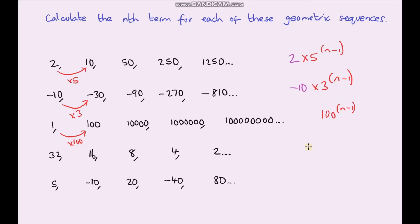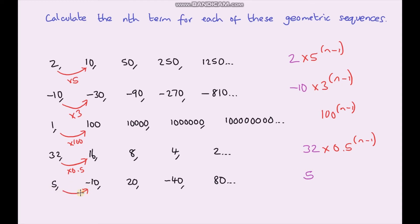The fourth sequence starts at 32. We're dividing by 2 each time, which is the same as multiplying by 0.5, giving 32 times 0.5 to the power n minus 1. Finally, the fifth sequence starts at 5. To go from 5 to negative 10 we multiply by negative 2, giving 5 times negative 2 to the power n minus 1. Be really careful to include brackets around the negative 2, because without them you'll get a different answer due to the order of operations. Thank you for watching — I'll see you in the next video!